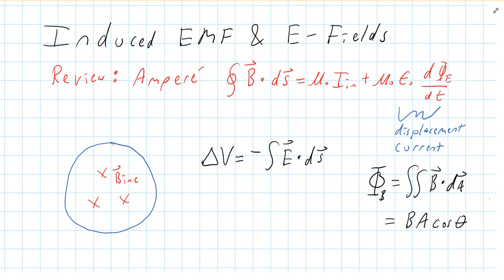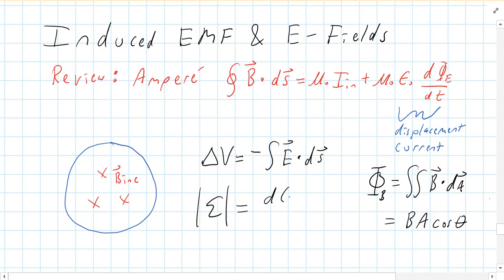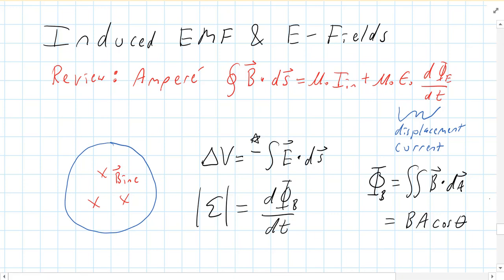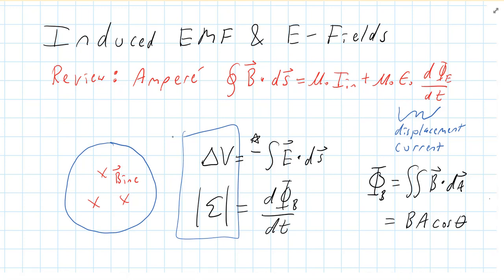We're going to start by rewriting Faraday's law. For Faraday's law, the magnitude of EMF is equal to the time derivative of the magnetic flux. I'm not going to put the negative sign in — there is a negative, that's Lenz's law, and it involves direction. But we've already taken care of that in the first equation for change in voltage. These two things are the same thing in this case, so we don't want to apply the direction correction twice. So we have two equations for change in voltage.